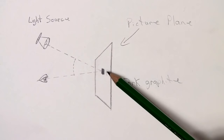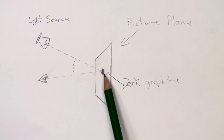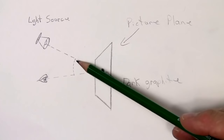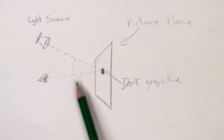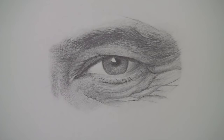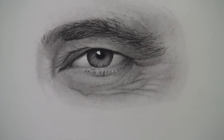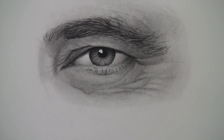Graphite shine is dependent upon where the light source is. Here's the picture plane, here's dark graphite, here's the light source shining down on your drawing, and here's where you're looking at it. If the angle from the light source to where you are looking at the drawing is the same, you're going to get graphite shine. It's totally dependent on where the light source is and the angle you're looking at it. Next to this, I've drawn the same eye using a mixture of charcoal and graphite.